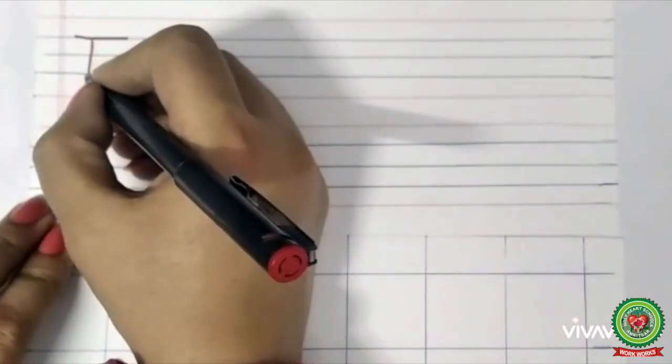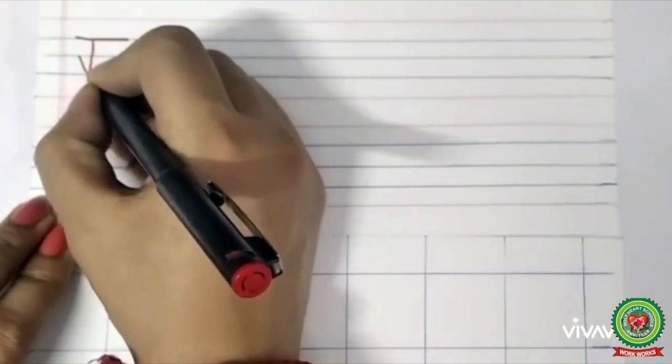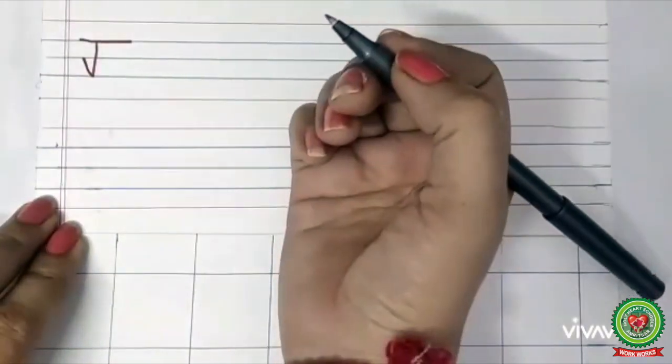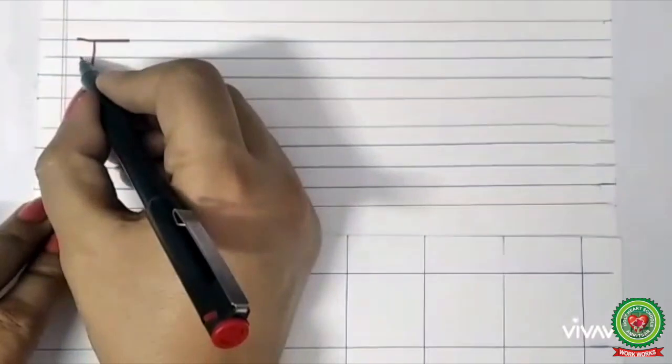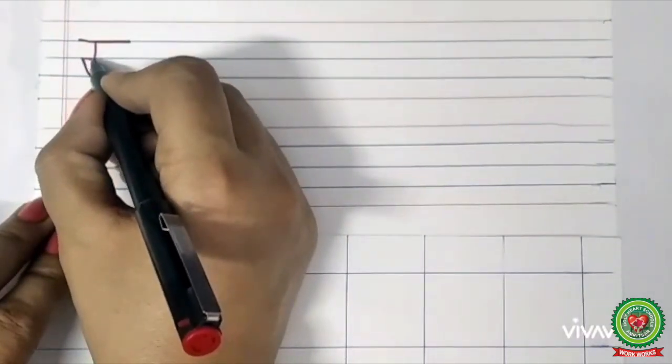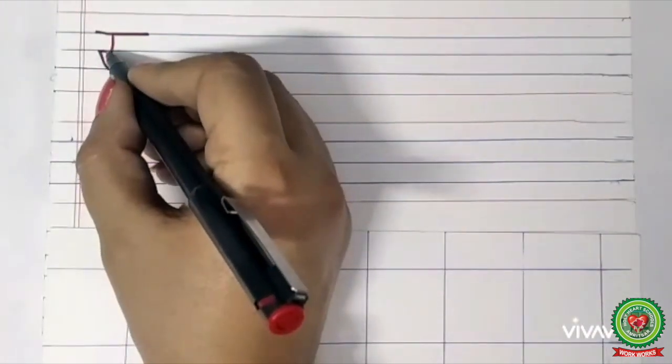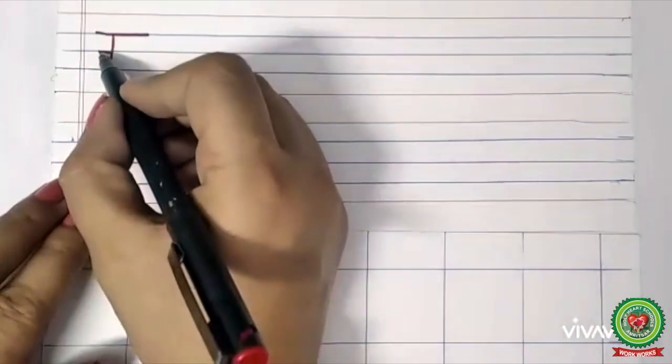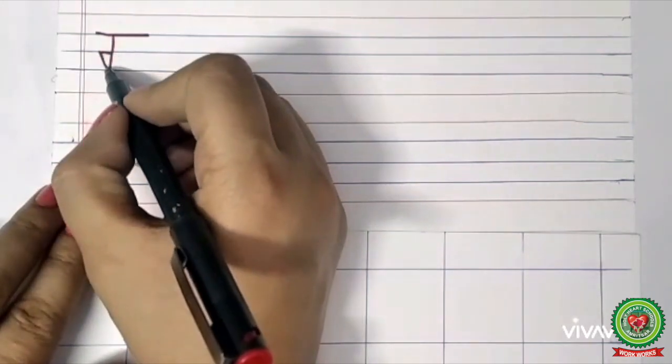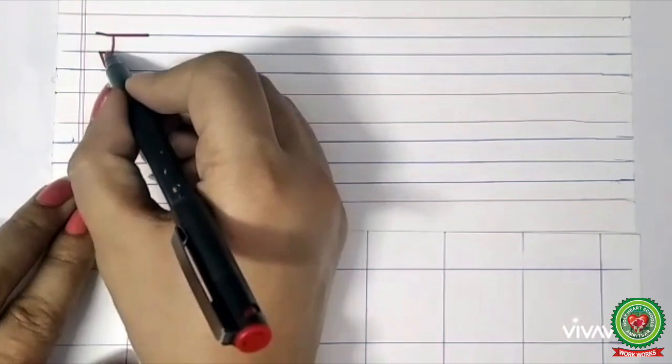Then from the edge of this standing line, I will draw a slanting line in an upward direction like this. And then from there I will draw a sleeping line like this. That means I will join the edge of this slanting line to the standing line like this.